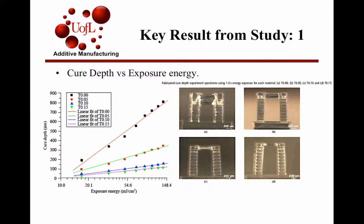The key results from this were: as you increase the light absorber concentration, the Q-DEP decreases, which in turn was very good for fabrication. The last part D was the part with higher concentration of light absorber.